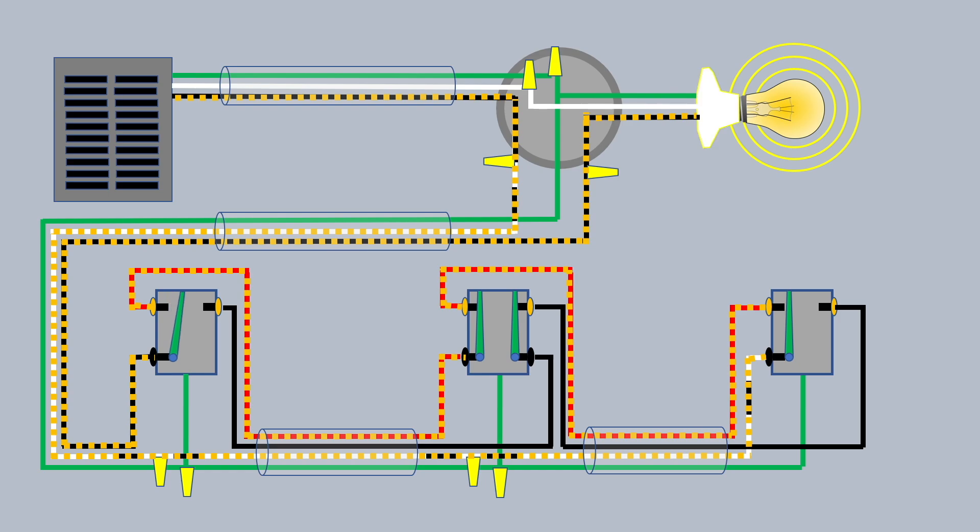Now if you switch any one of these switches, there I've shown the far left switch switched, the light goes out because if you followed that, you'll see that the power is not making it through the three switches to the light. And you can see how that one switch off and on would turn the light off and on.